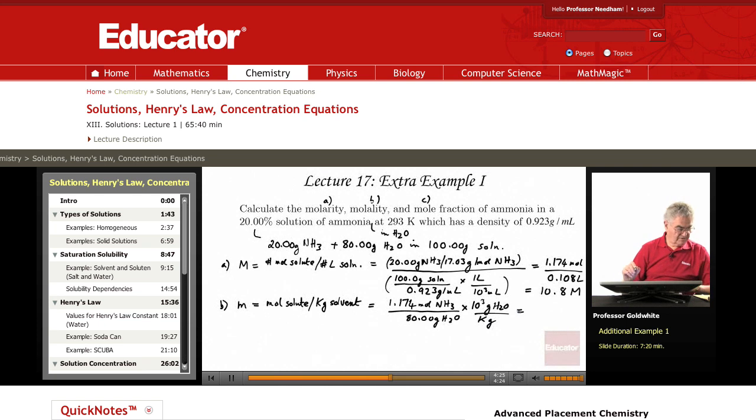And if we carry through that calculation we find that we get 14.7 moles per kilogram. Notice in this reasonably concentrated solution molarity and molality are quite different numbers. In very dilute solutions they get closer and closer, but in concentrated solutions they can be quite different.